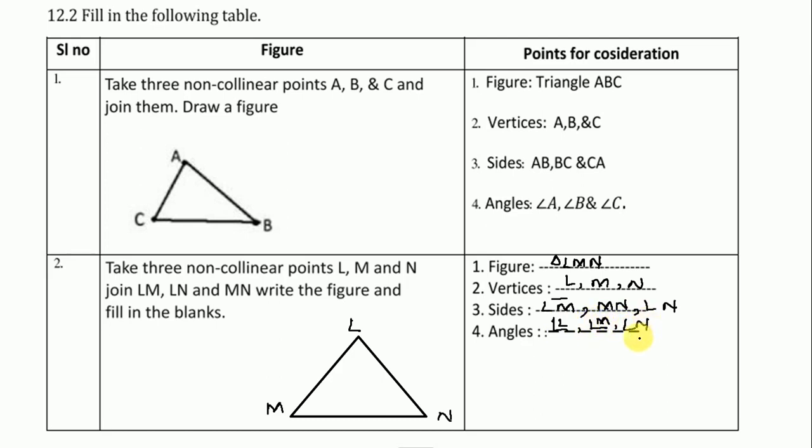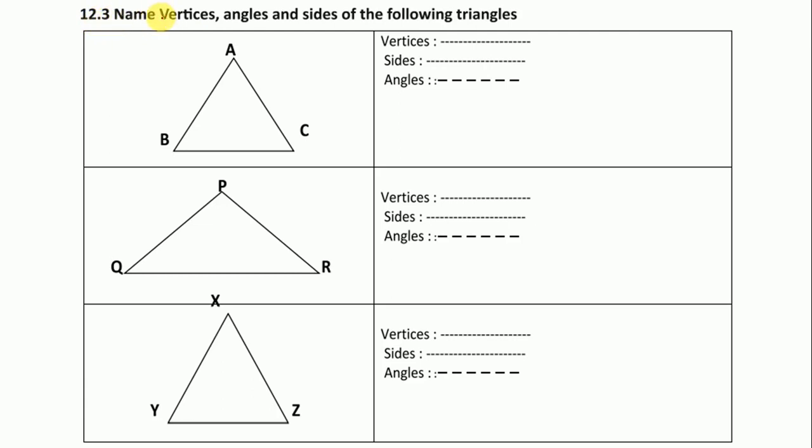12.3, name vertices, angles, and sides of the following triangles. Here vertices are A, B, C, so we write A, B, C. Sides we start from this side AB, BC, and CA. Angles are ABC, so we write angle A, angle B, and angle C.